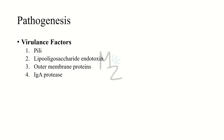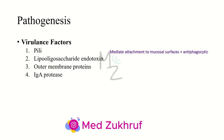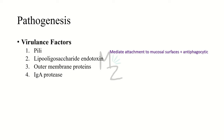Pathogenesis — we'll talk about virulence factors. The first is pili, one of the most important virulence factors because they mediate attachment to mucosal cell surfaces and are antiphagocytic. Piliated gonococci are usually virulent, whereas non-piliated strains are avirulent. In the cell wall, there are two high-yield virulence factors: the lipo-oligosaccharide endotoxin and the outer membrane proteins — protein 1, 2, and 3. There is also IgA protease, which hydrolyzes secretory IgA that would otherwise block attachment to mucosa.